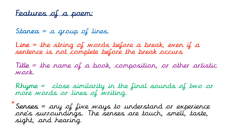Another feature that writers of poems often use is the use of our five senses. They do this to help us imagine what we might be able to taste, touch, hear, smell or see. Senses are any of the five ways to understand or experience one's surroundings: touch, smell, taste, sight and hearing. Writers of poems often use these to help us imagine what they are writing about.